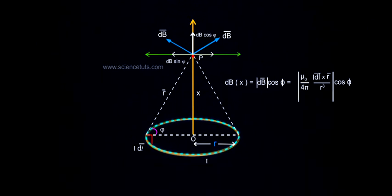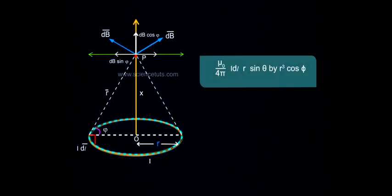dBx equals modulus of dB-bar cos phi equals modulus of mu_0 by 4π i dl-bar cross r-bar by r³ cos phi, which is mu_0 by 4π i dl r sin theta by r³ cos phi. But,